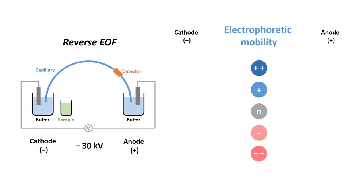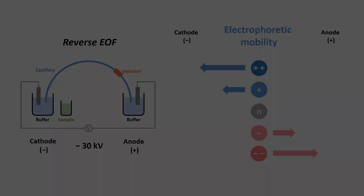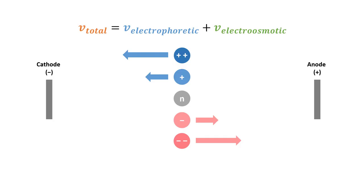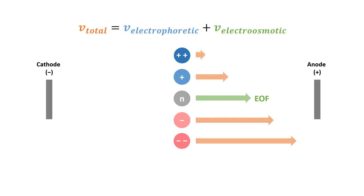As for the electrophoretic mobility, the same principles apply. When an electric field is applied, the cations are attracted towards the cathode, the anions are attracted towards the anode, while the neutral species remain unaffected. We can find the migration rate of individual anions simply by combining the electrophoretic velocity and the electro-osmotic velocity. Therefore, overall, the anions will migrate the fastest, followed by the neutral species, and the cations will migrate the slowest.